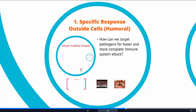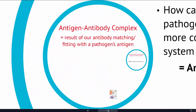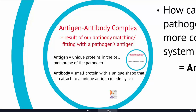The specific immune response attempts to do just that, and that red flag is the antibody-antigen complex. This is the result of our antibodies matching up and fitting with the pathogen's antigen. An antigen is a unique protein in the cell membrane of the pathogen — just like we have self-proteins, antigens are the self-proteins of the pathogen. An antibody is a small protein with a unique shape that can attach to that antigen.